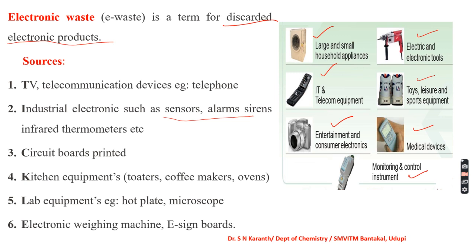Other sources include printed circuit boards used in computers, kitchen equipment like toasters, coffee makers, ovens, and refrigerators, as well as lab equipment such as LEDs, stirrers, and electronic weighing machines. Once these complete their useful life, they are discarded and become unwanted material — what we call e-waste.